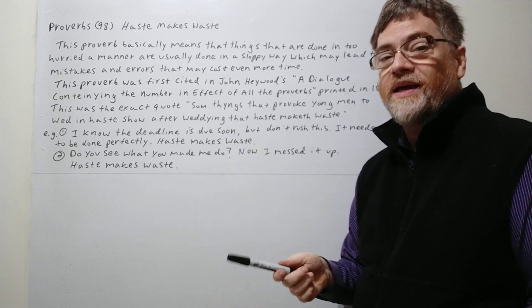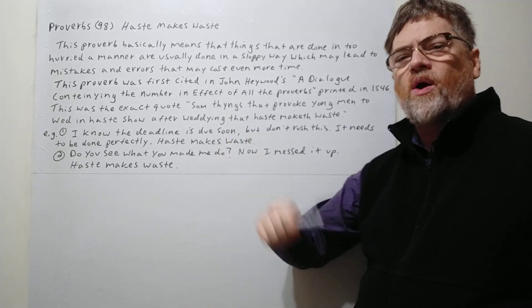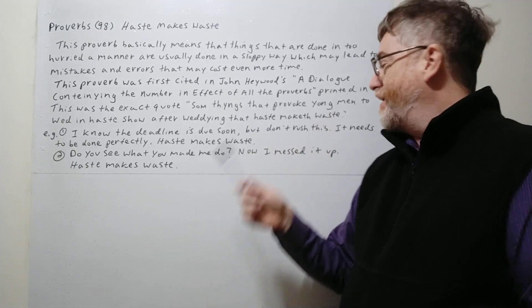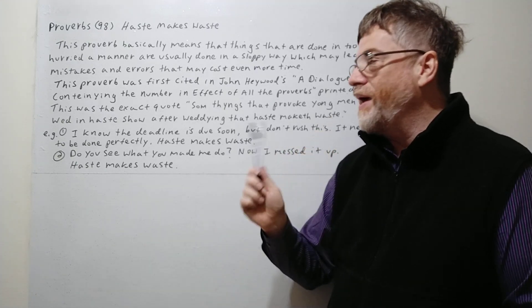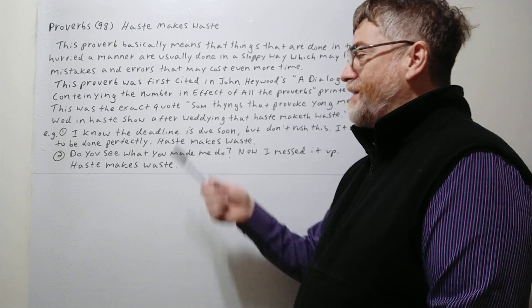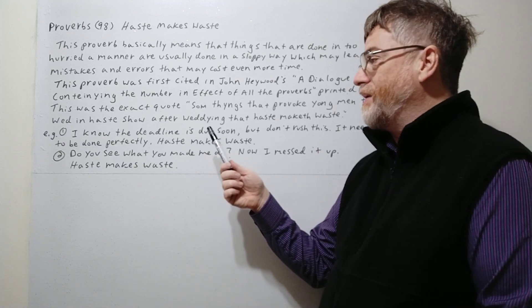Things has an I in it. So 'some things that provoke,' that cause young - without a U - young men to wed in haste, to marry too soon, to marry too quickly without thinking about it. That's the quote he was using there.